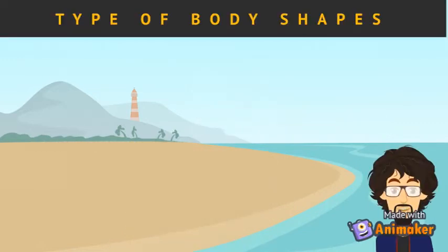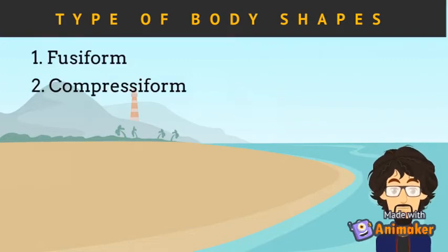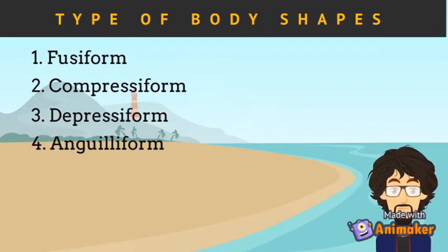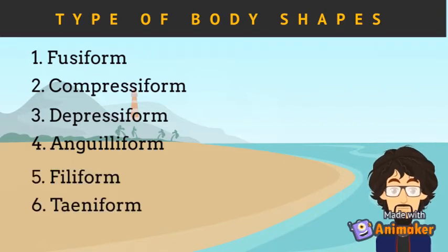Some body shapes are also used for camouflage. Pipefish resemble eel grasses, and stonefish resemble stones. There are seven types of fish body forms or shapes: fusiform, compressiform, depressiform, anguilliform, filiform, taeniform, and globiform.